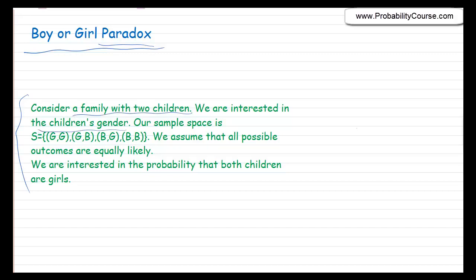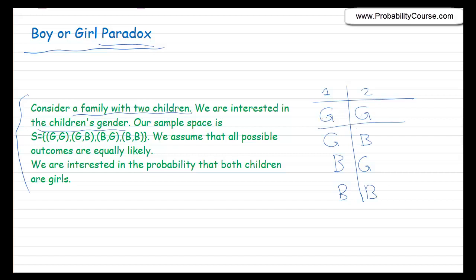What are the possibilities? The first child might be a girl and the second child might also be a girl, or the first child might be a girl and the second child a boy, or we might have a boy-girl scenario, or a boy-boy scenario. We assume that each child is either a girl or boy with probability 50% and independent of the other child. So the probability of girl-girl is 1/2 times 1/2 = 1/4, and similarly each of the four outcomes has probability 1/4.